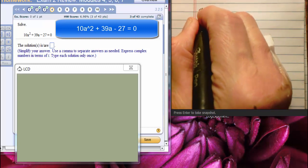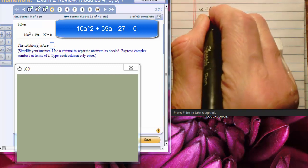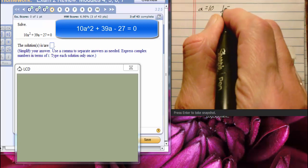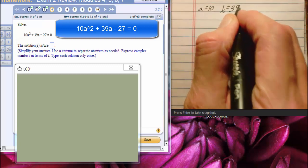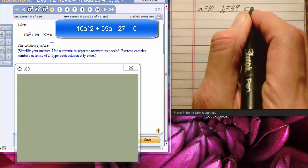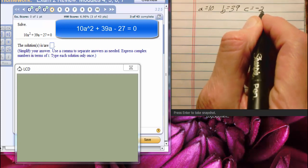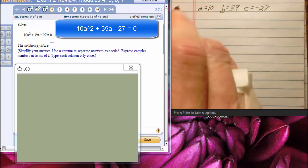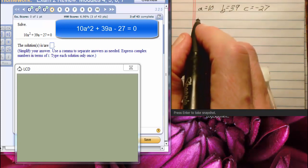Our A number is going to be 10, our B number is going to be 39, and our C number is negative 27, and I'm going to use the quadratic formula.